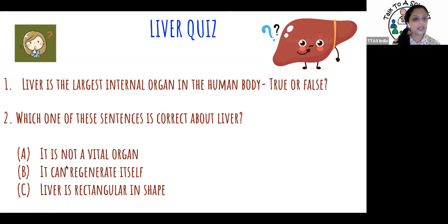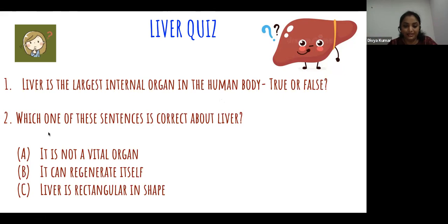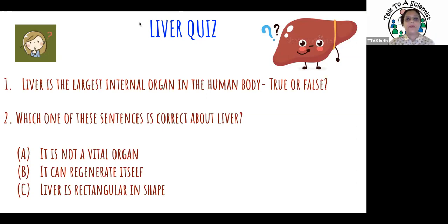Moving to the next question: which of these sentences is correct about liver? A - it is not a vital organ; B - it can regenerate itself; C - liver is rectangular in shape. All of you answered correctly - it is B. It is a vital organ, therefore A is wrong. It can regenerate itself, so B is right. Liver is not rectangular - it is cone or wedge shaped. All of you answered correctly.